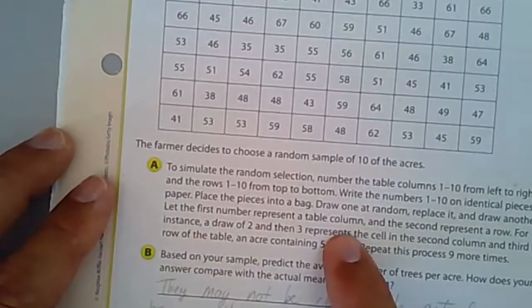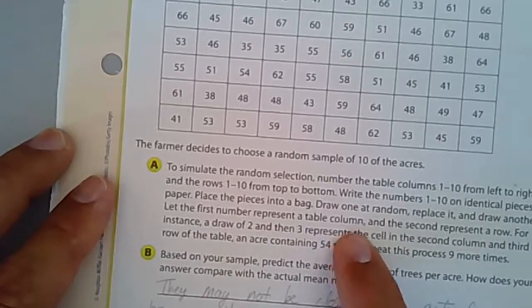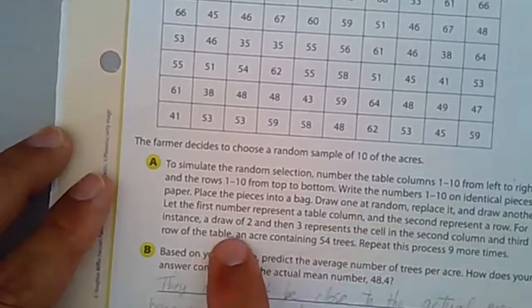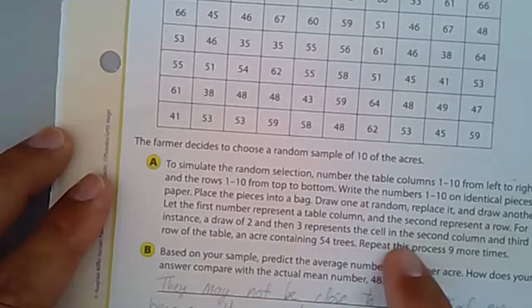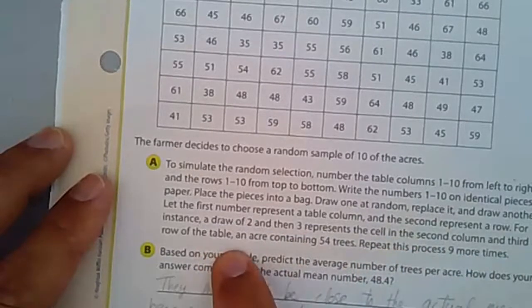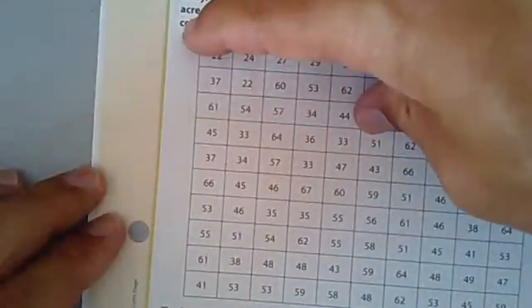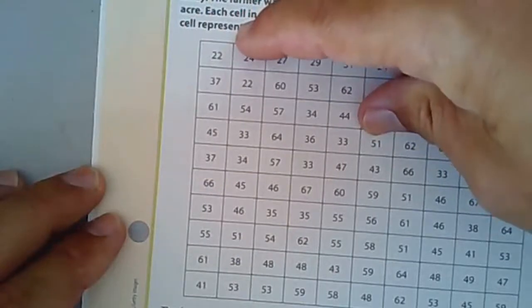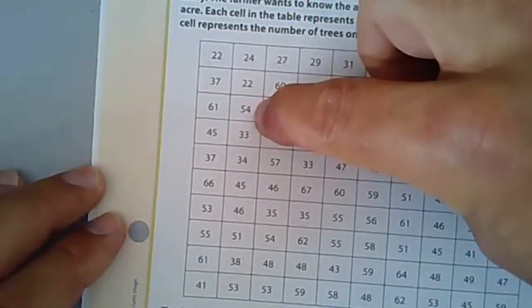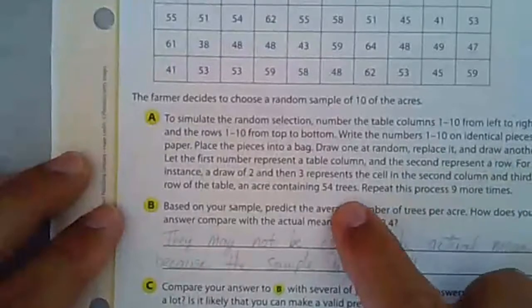Draw them, and the first number represents the table's column and the second one represents the row. For instance, draw 2 and 3 represents a cell in the second column and third row. So if you draw 2, that goes to the second column. Draw 3, that gets you to 54, and that's what they're saying: 54 trees.